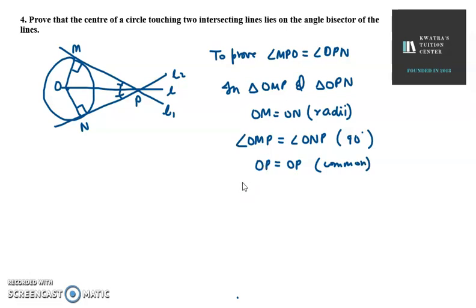So this is congruent by RHS congruency. और इससे हमें क्या पता चलता है कि हमारा angle MPO is equivalent to OPN. और इससे क्या समझाता है कि जो line L है वो किसको bisect कर रही है, L bisects angle